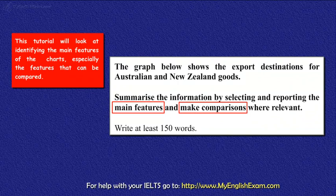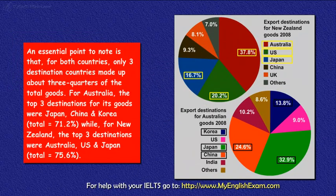This tutorial will look at identifying the main features of the charts, especially the features that can be compared. An essential point to note is that for both countries, only three destination countries made up about three quarters of the total goods.